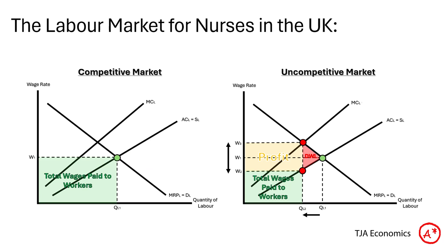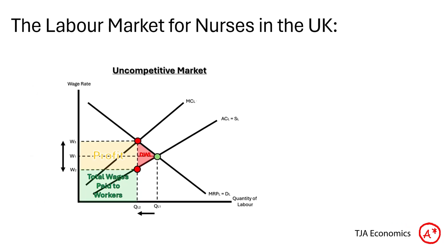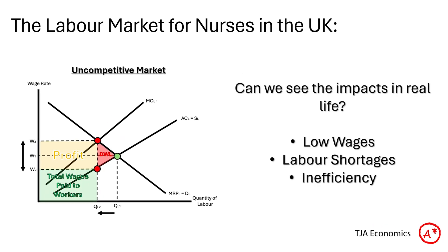Here we can see the two markets side by side. On the left we have a competitive market that has reached allocative efficiency, and the green total wages box is much bigger than on the right-hand side in the uncompetitive monopsony market. The green box gets much smaller. So we would expect to see lower wages — wages falling from W1 to W2 — labour shortages with quantity of labour falling from QL1 to QL2, and also some inefficiency or deadweight loss.